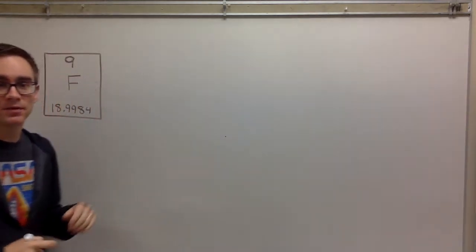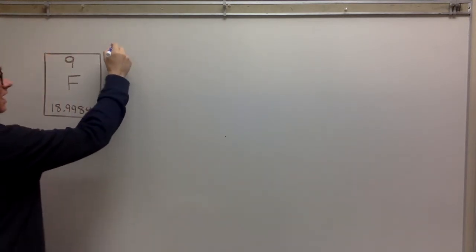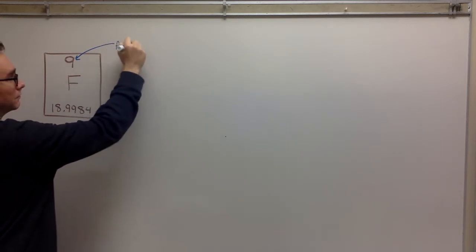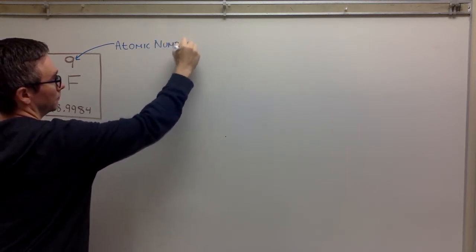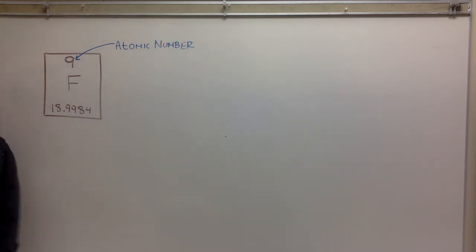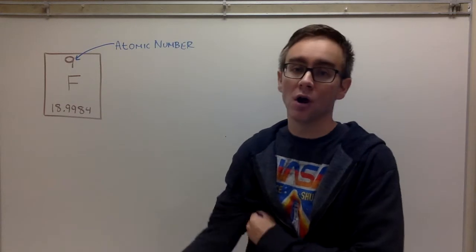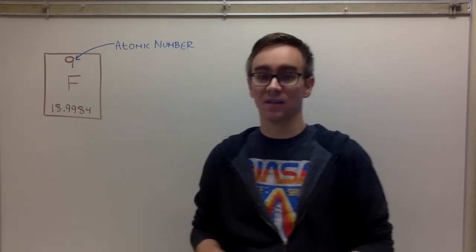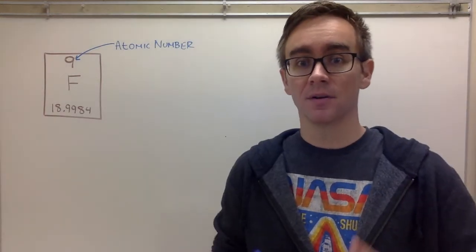First things first, we have this top number here. It's always the biggest number and it is always a whole number. This number right here is called the atomic number. It is listed in order — you'll notice that no two elements have the same atomic number. There are 118 elements on the periodic table because each one has a unique atomic number with no doubles.